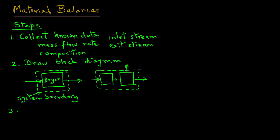Three, we will write all the available data that is given, for example in the problem statement, on the block diagram. These data could involve the flow rate or the composition and so on.